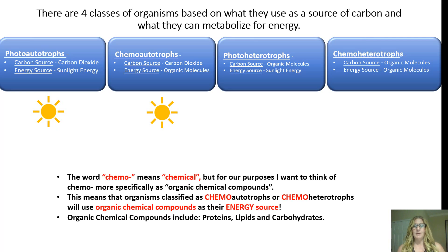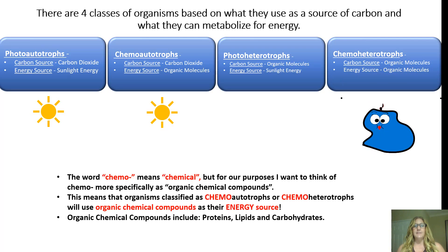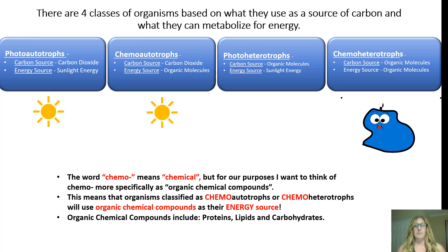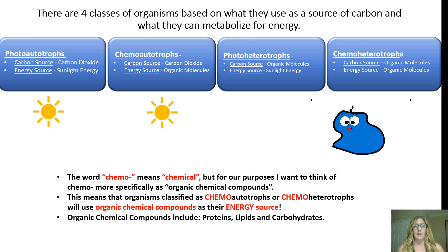The word chemo means chemical, but think of chemo more specifically as organic chemical compounds. Chemoautotrophs and chemoheterotrophs use organic chemical compounds as their energy source. These would be your proteins, lipids, and carbohydrates.